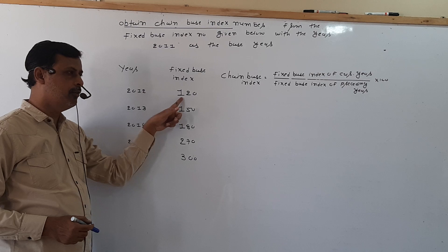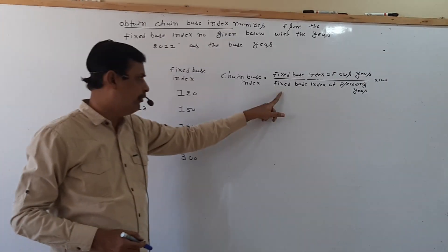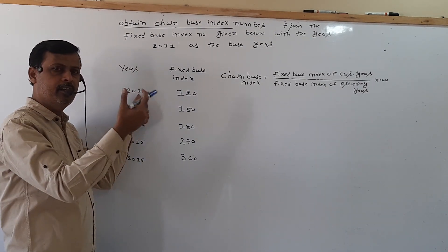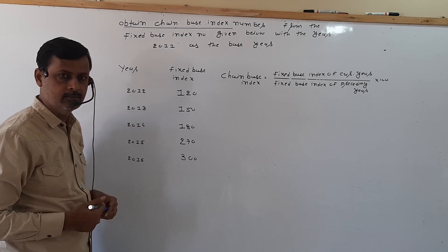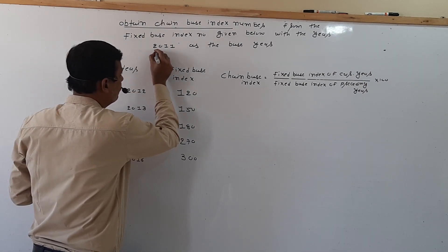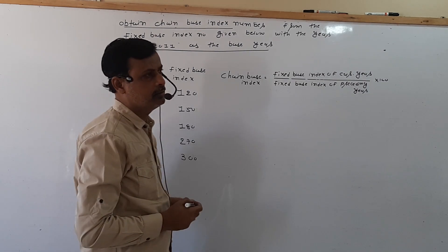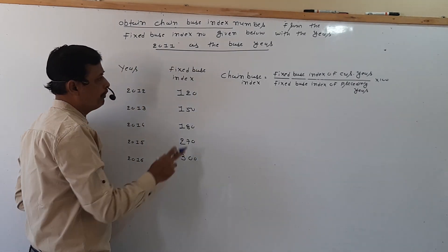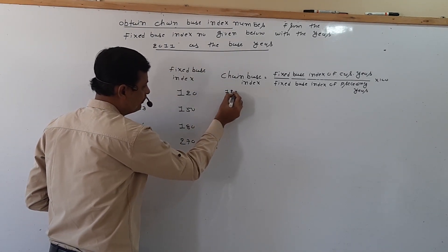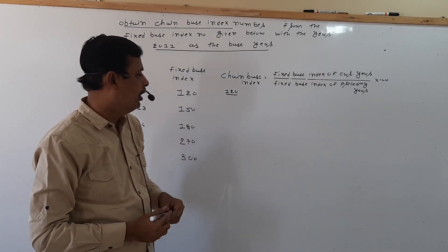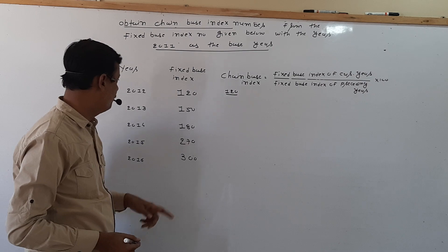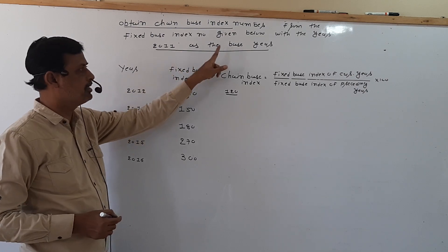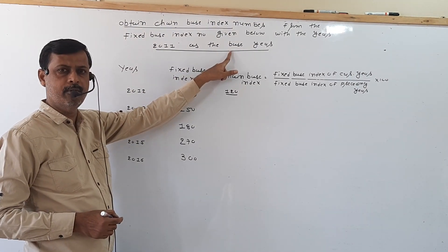Fixed base index of current year is 120. The preceding year of 2012 is 2011, and 2011 is the base year, so the base year index is always 100. So, fixed base index: 120 upon fixed base index of preceding year 100, that is 120.